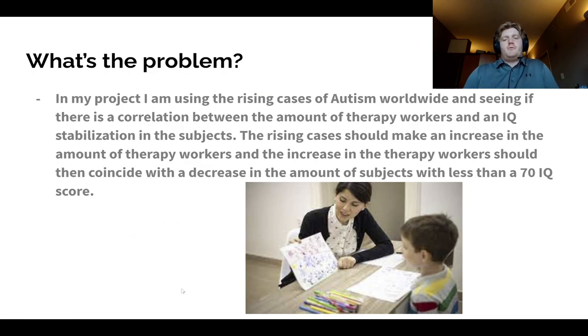So what's the problem? In my project, I am using the rising cases of autism worldwide and seeing if there is a correlation between the amount of therapy workers and an IQ stabilization in the subjects. The rising cases should make an increase in the amount of therapy workers, and the increase in the therapy workers should then coincide with a decrease in the amount of subjects with less than a 70 IQ score.